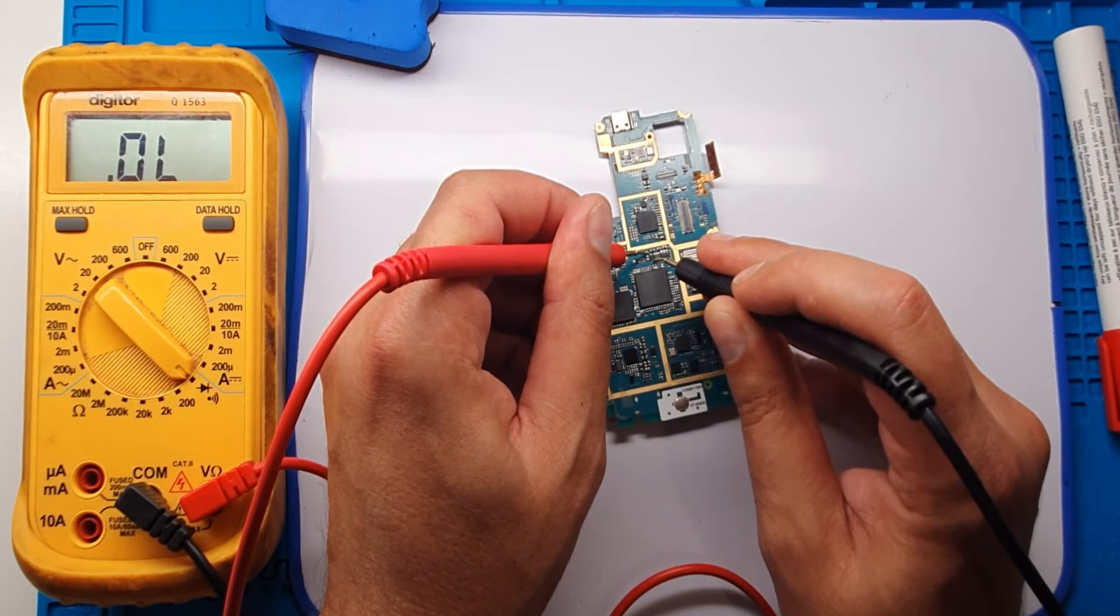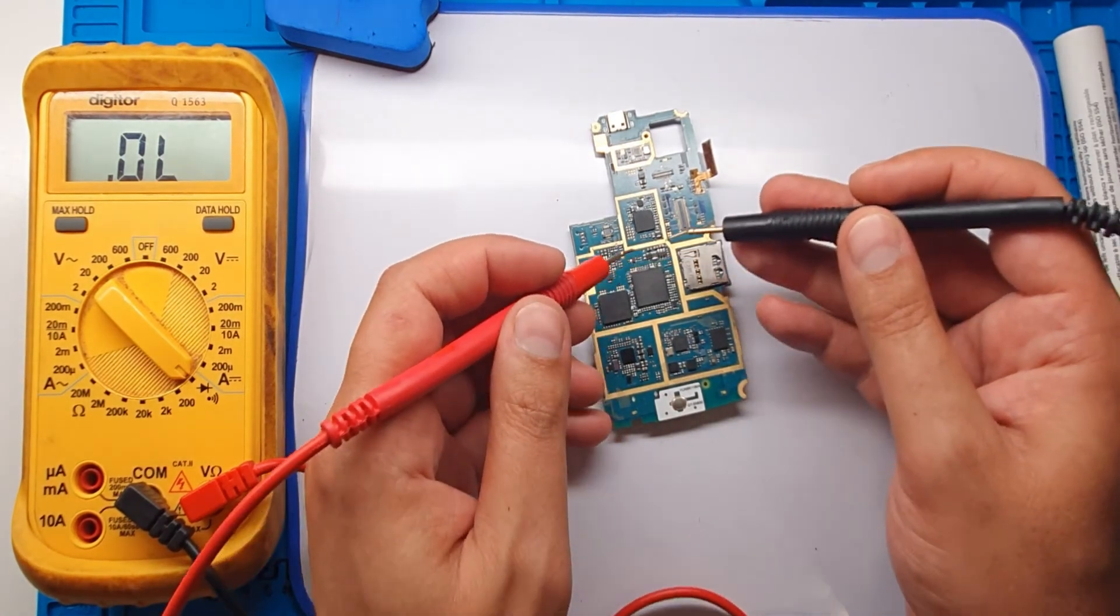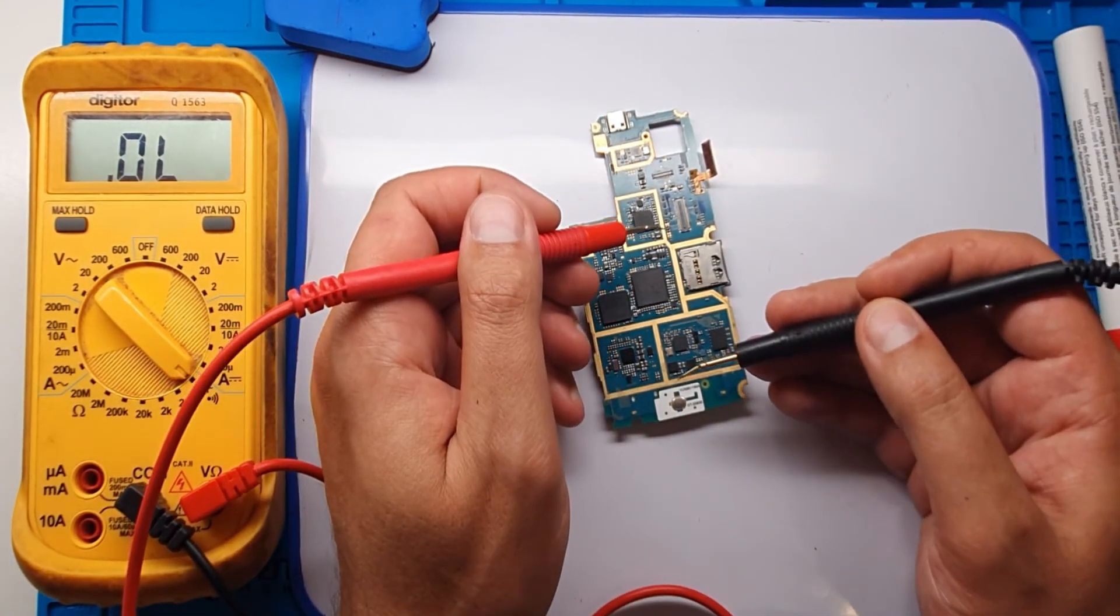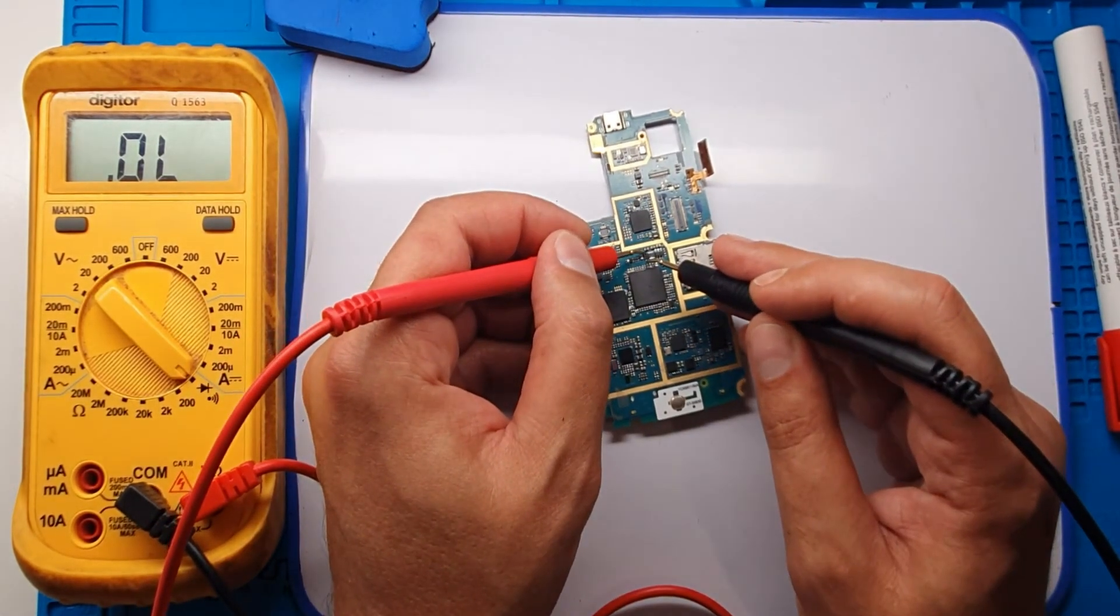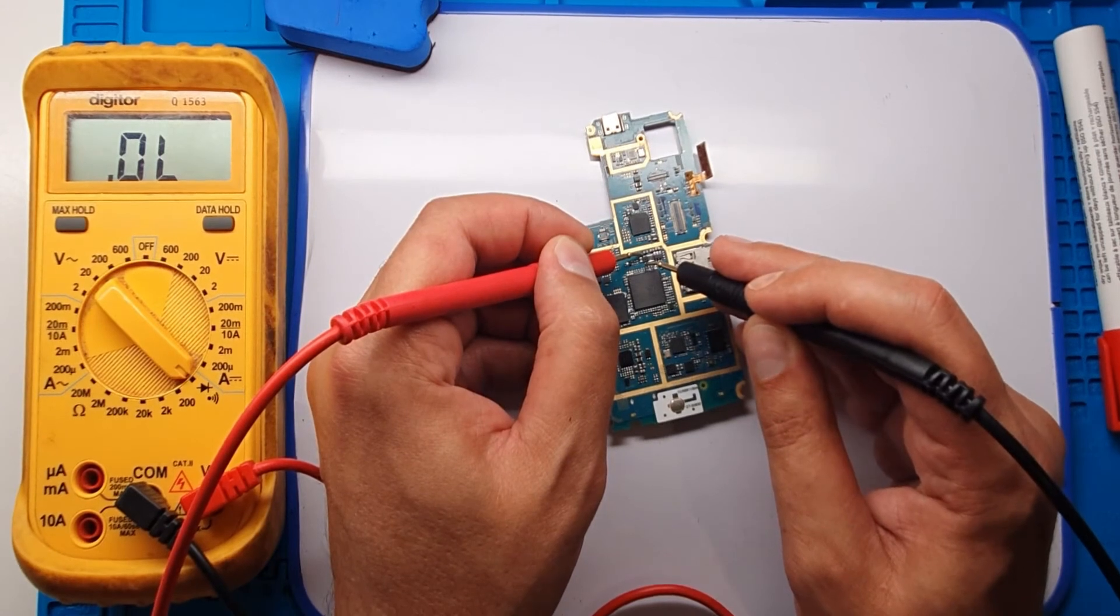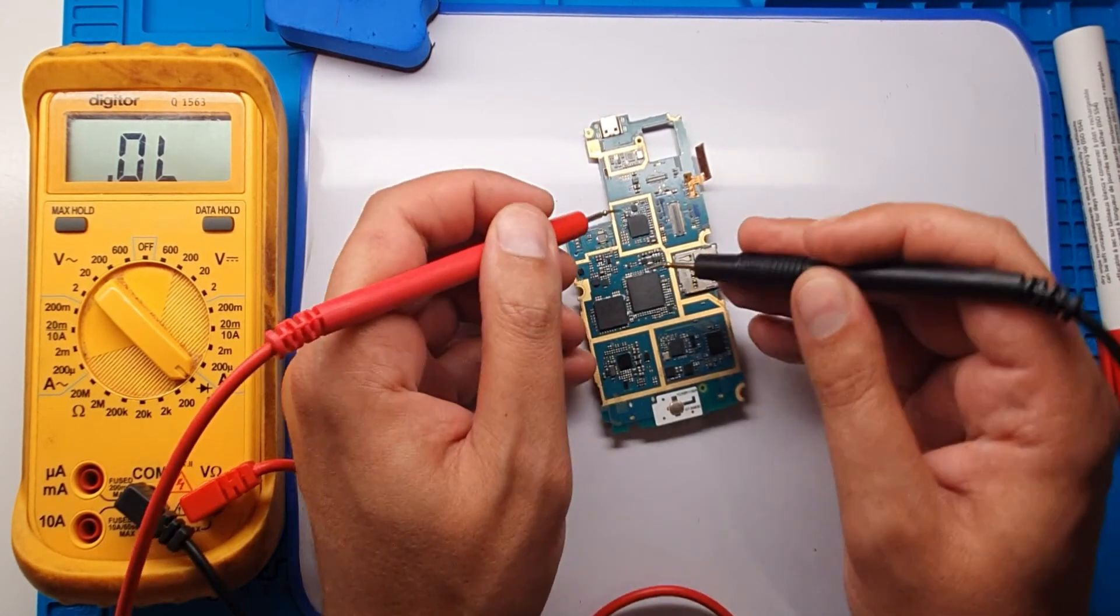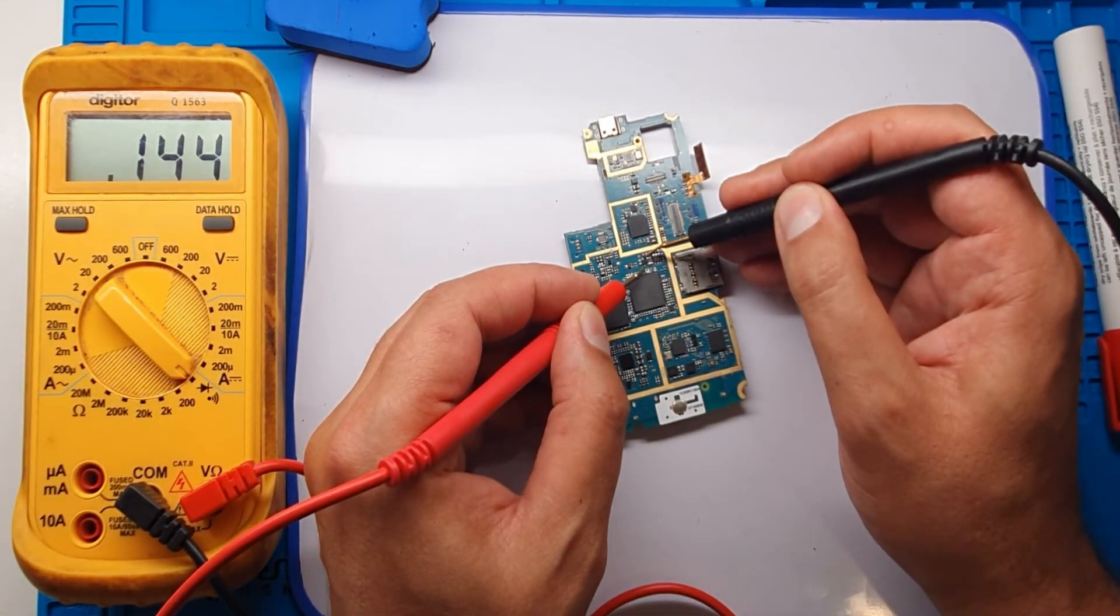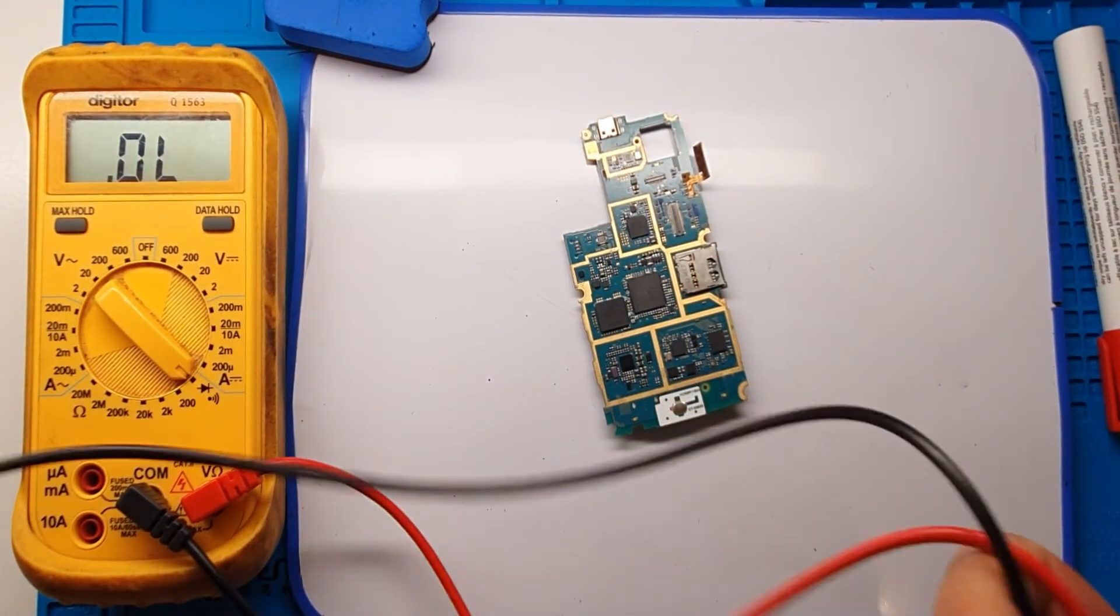OL. That means when you check this component, one side is showing the digit number, one side is showing you the OL. Again, I'll show you. When the red cable is on top, it's showing the OL. But when the black cable probe is put on the top, it's showing the digit number. That is tested, easy test by multimeter.